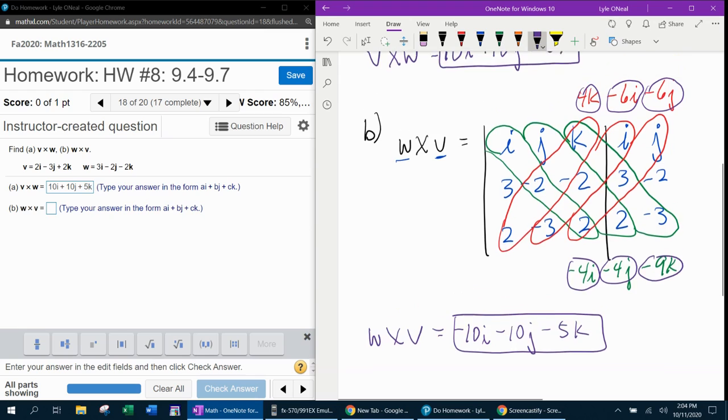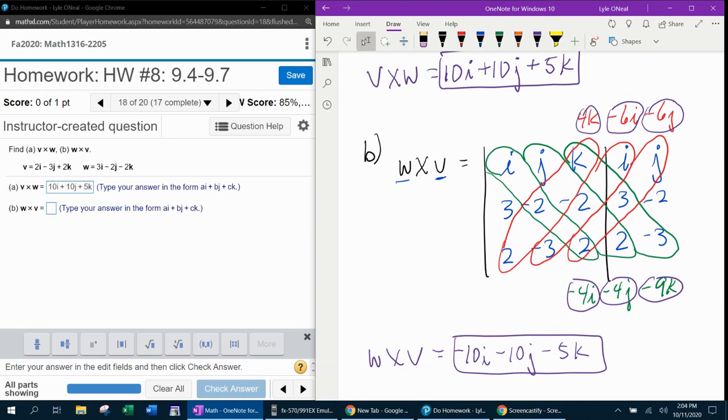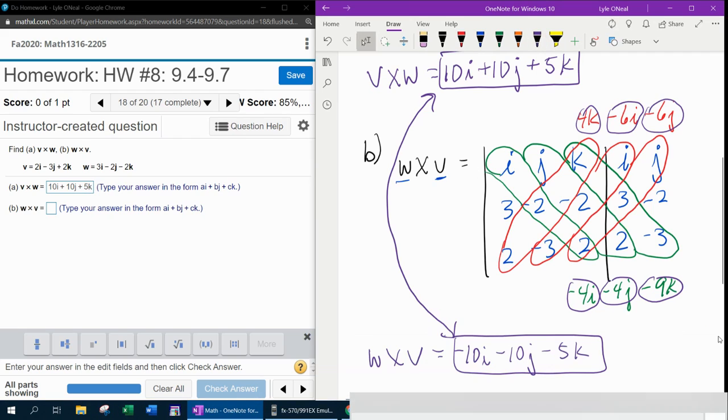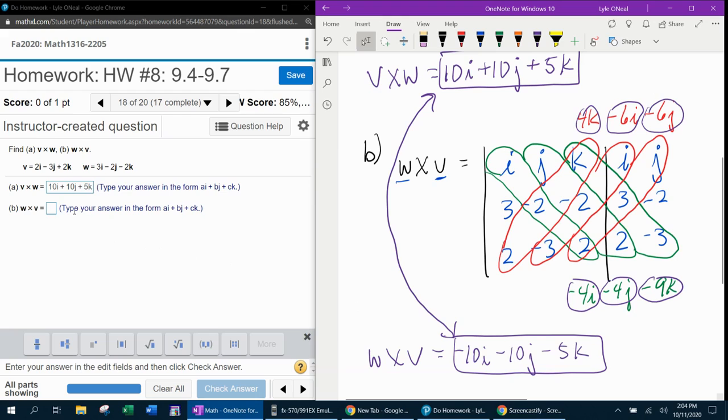Now, what I would like you to notice is how W cross V compares to V cross W. Do you see that it is exactly the same result, but all of the signs are opposite? Now, you may be wondering, is that true every time? And the answer is, yes, it is. So if you know V cross W, then you automatically know W cross V. All you have to do is change the signs.